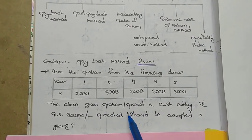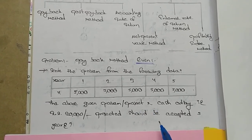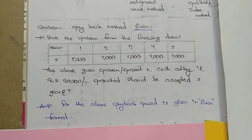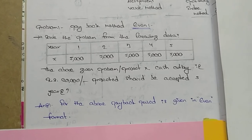The above given problem for Project X has a cash layout of 20,000. The project should be accepted for five years. For the above, payback period is given in even format.